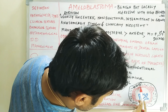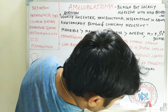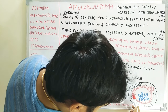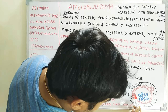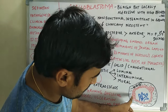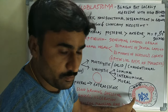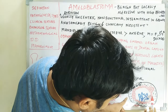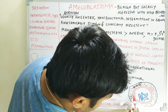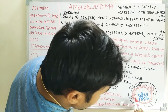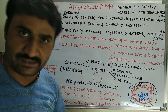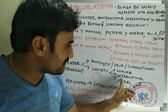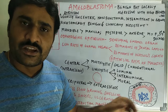In luminal amyloblastoma you can see increased cell layers in the epithelium lining the lumen — there is increased thickness of the epithelial lining compared to the normal two cell layers remaining in other parts.